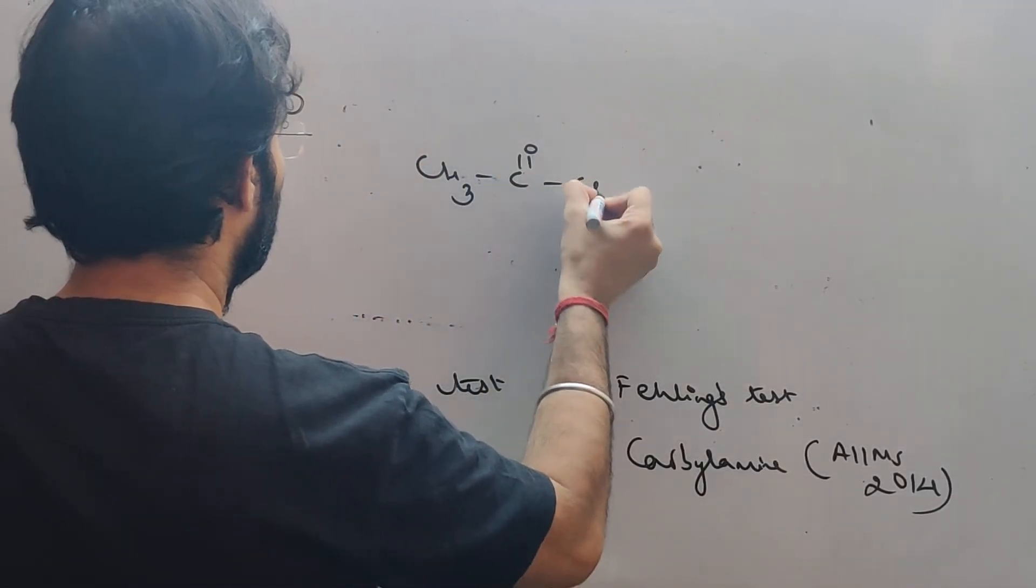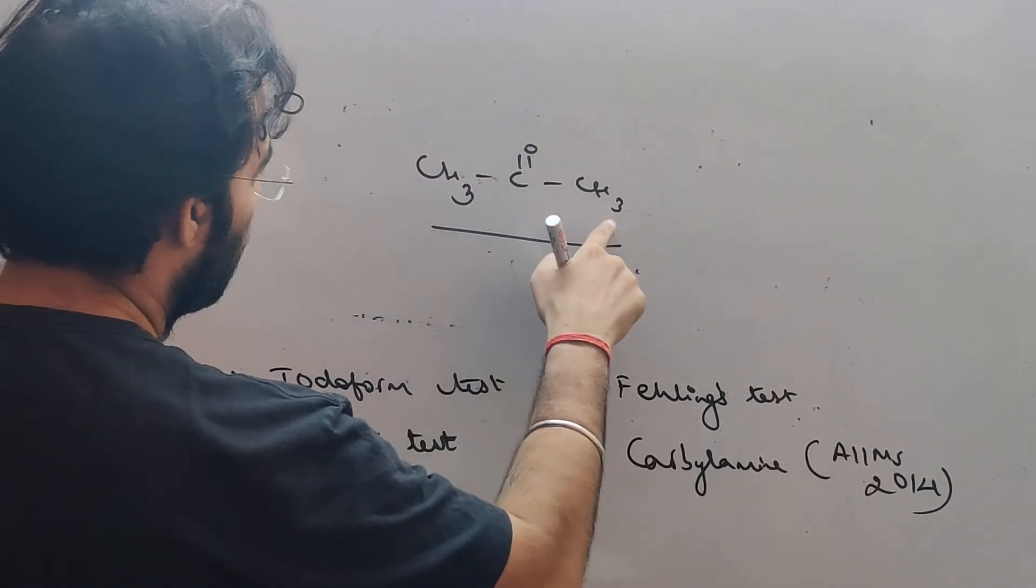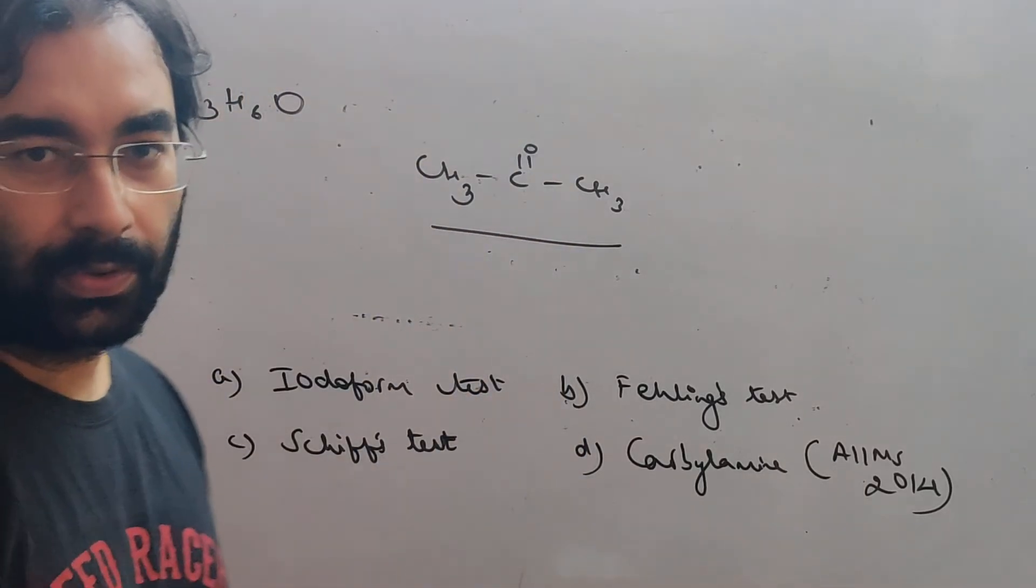Acetone is 3 carbon ketone C3, 1, 2, 3, C3, H6, 3 and 3, 6, 1, 0, C3H6O, right?